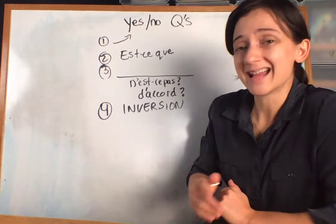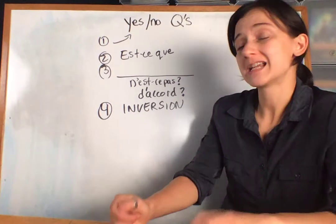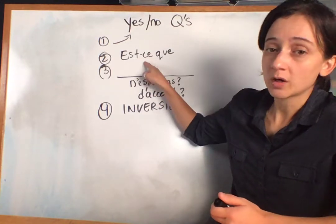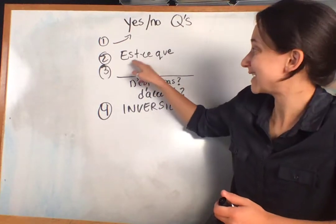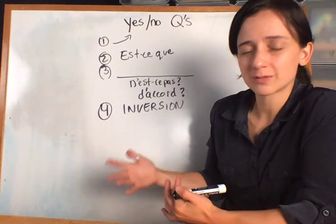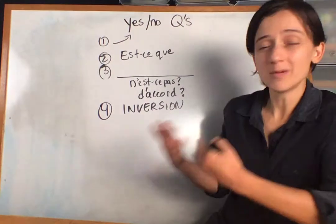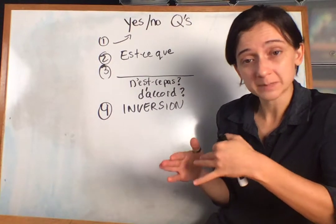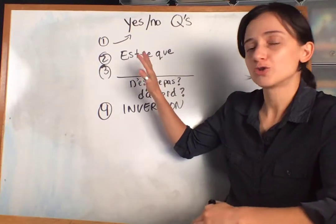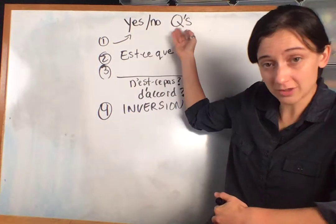The second way to make a yes or no question is to add 'est-ce que' at the beginning. You take a complete sentence and put 'est-ce que' at the top. You should remember this — we already talked about it. It means 'is it that.' The literal translation isn't really going to help us; it's almost like the upside-down question mark at the beginning of a sentence in Spanish. You don't really need to translate it, but it's telling you a question is coming up.